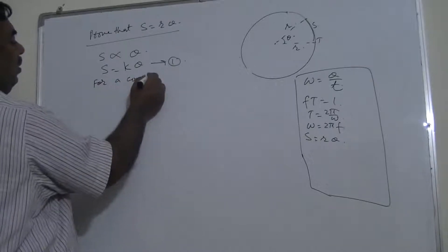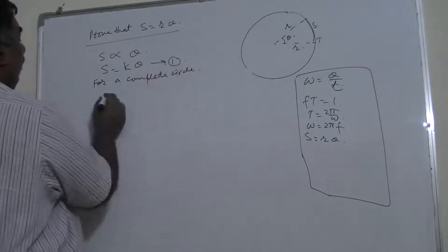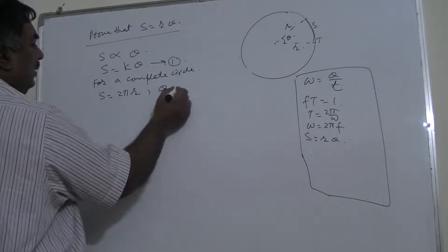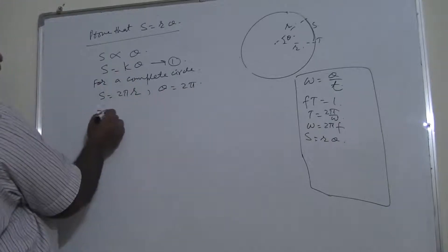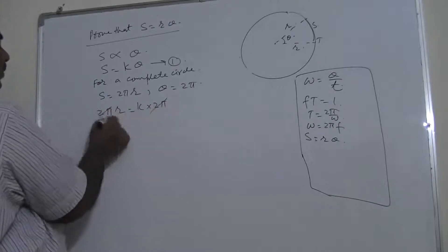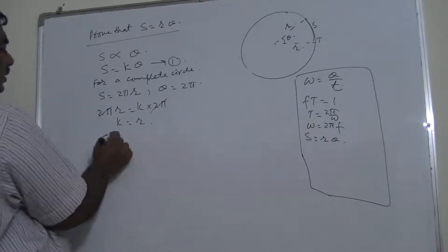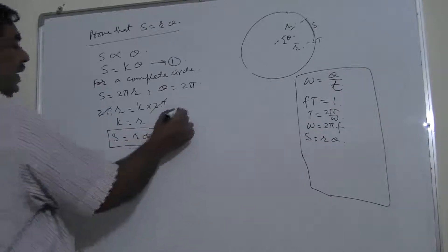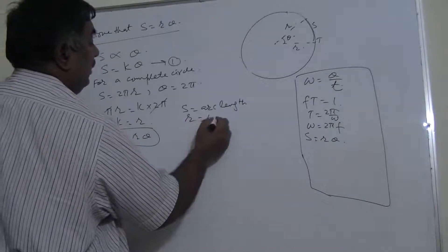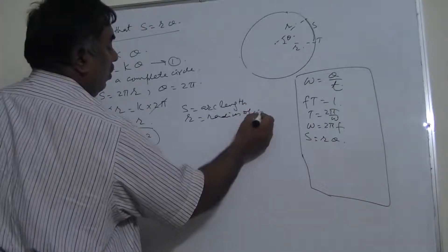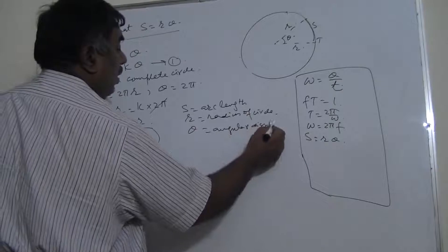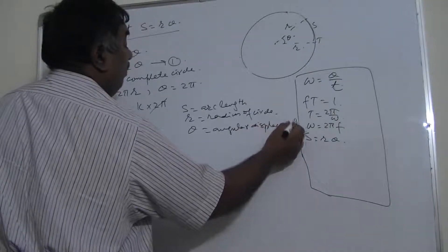We find the constant k using known values for a complete circle: when s equals the circumference 2πr and theta equals 2π. Substituting: 2πr equals k times 2π, so the 2π cancels and k equals r. This proves that s equals rθ, where s is arc length and r is the radius of the circle, and theta is the angular displacement.